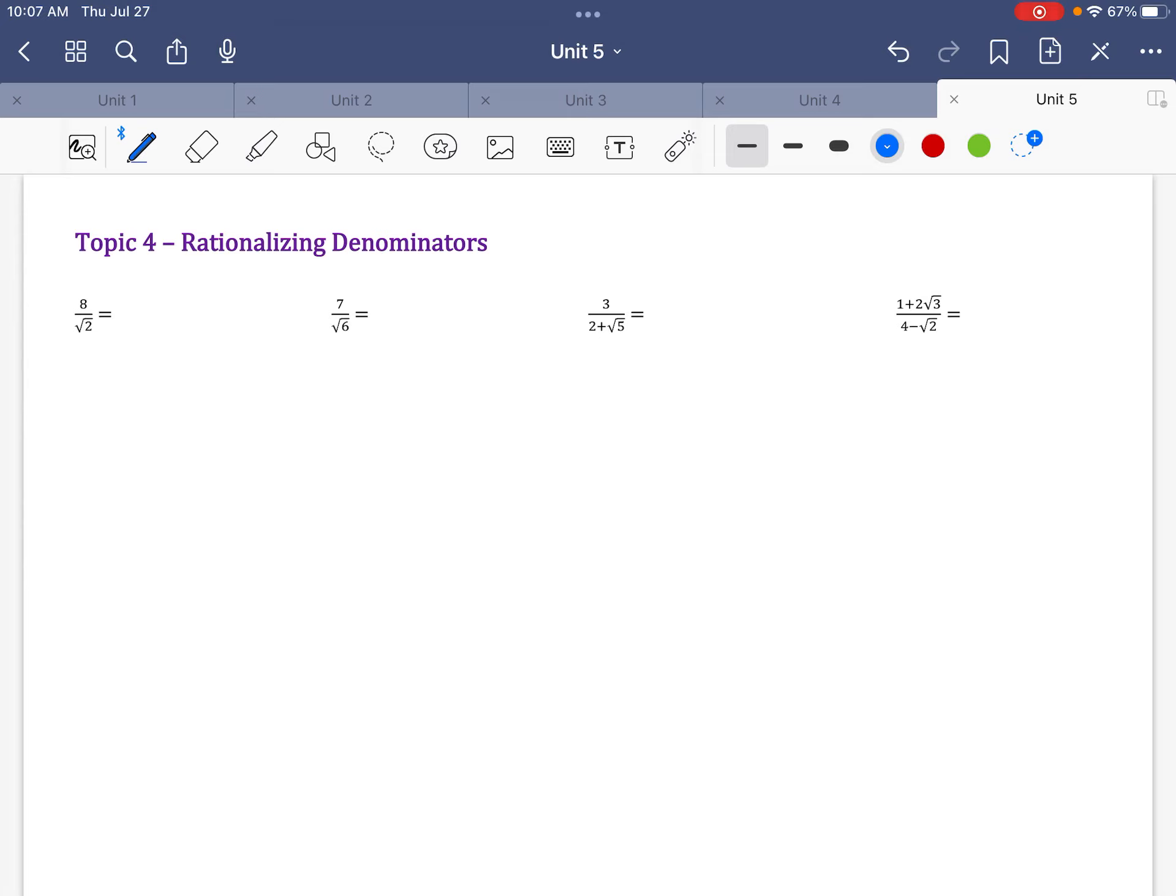But multiplying by a number like that is easier because you can just stop whenever you want, however accurate you want to be. And so I'm pretty sure that's the reason why. But anyway, they don't like to leave radicals in the denominator. So here we go.